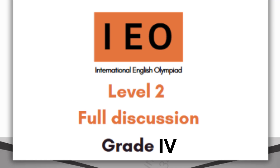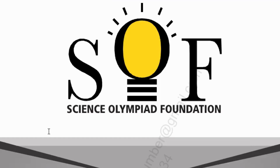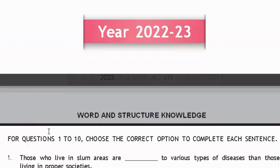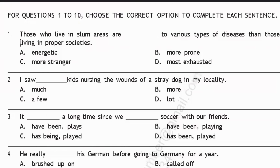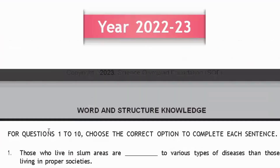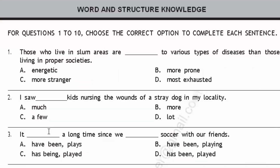Hi everyone, welcome back to Indian Online School. Hope you all are doing great. In today's video, I'm going to explain the SOF International English Olympiad Level 2 paper. So let's get started. The IEO Level 2 paper consists of 35 questions, is for 40 marks, and you will be given one hour to complete this paper.